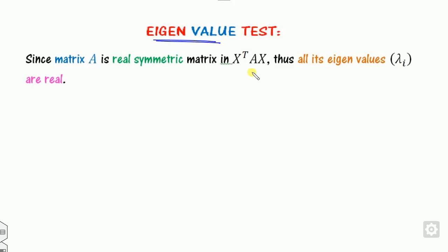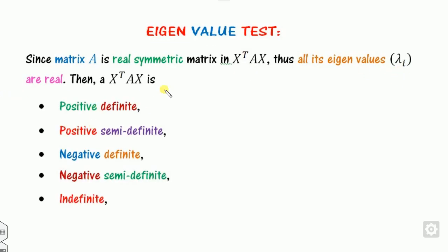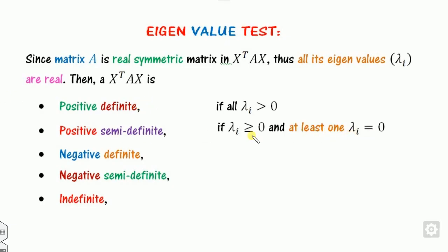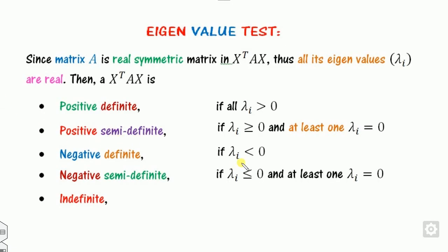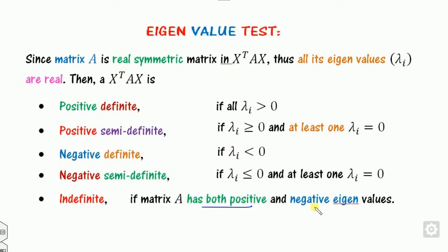The second method is the eigenvalue test. Calculate the eigenvalues λi of matrix A. If all eigenvalues are strictly positive, the function is positive definite. If at least one eigenvalue is 0 and all others are positive, it is positive semi-definite. If all eigenvalues are negative, it is negative definite. If at least one eigenvalue is 0 and all others are negative, it is negative semi-definite. If some eigenvalues are positive and some are negative, the function is indefinite.